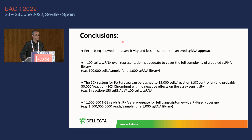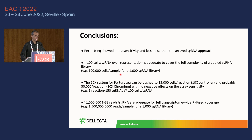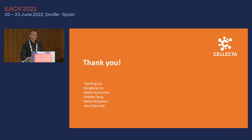In conclusion, PerturbSeq shows more sensitivity than the array screen and less noise with no false positives observed. 100 cells per sgRNA is enough to cover the full complexity of a library — so you need 100 times the library complexity in total cells. We can load 15,000 cells per reaction on the Chromium controller, and with the newer Chromium X, you should be able to use at least 30,000 or more per reaction. For NGS, you need 1.5 million reads times the complexity of your library. Thank you to all the team members who contributed to this work.